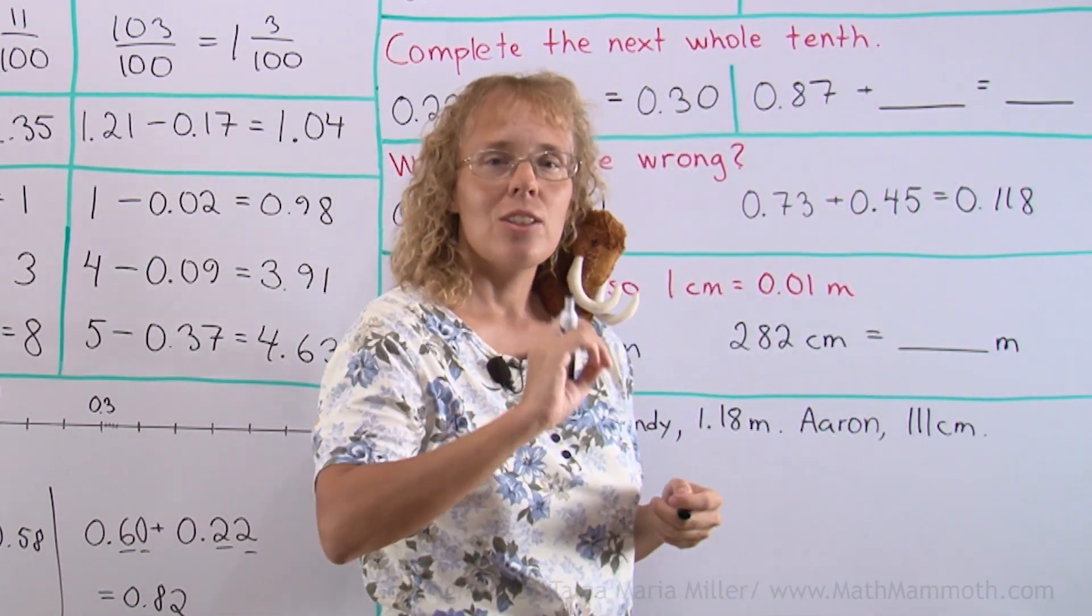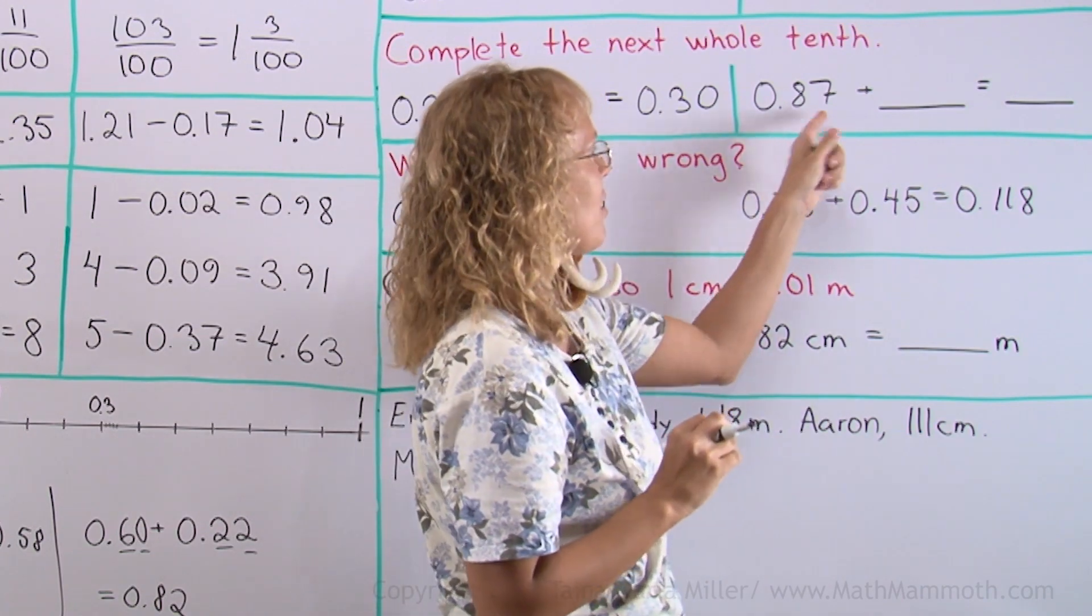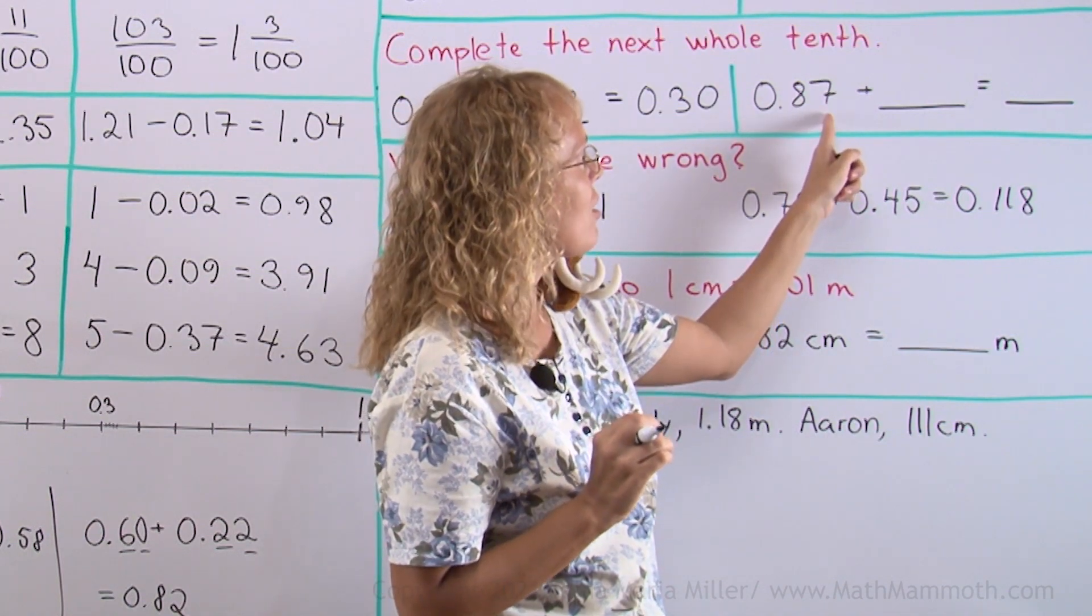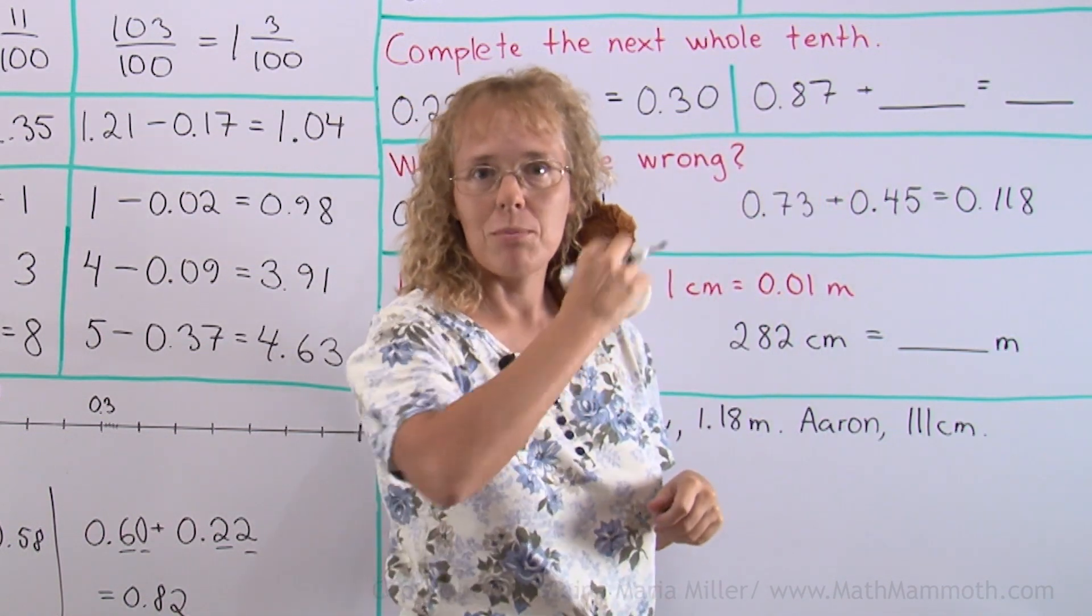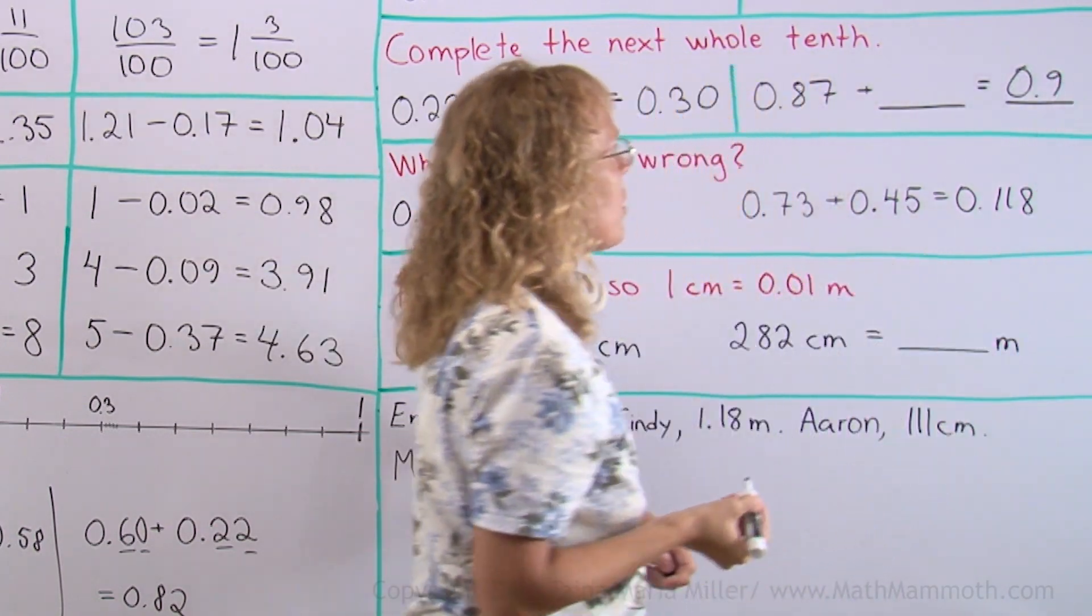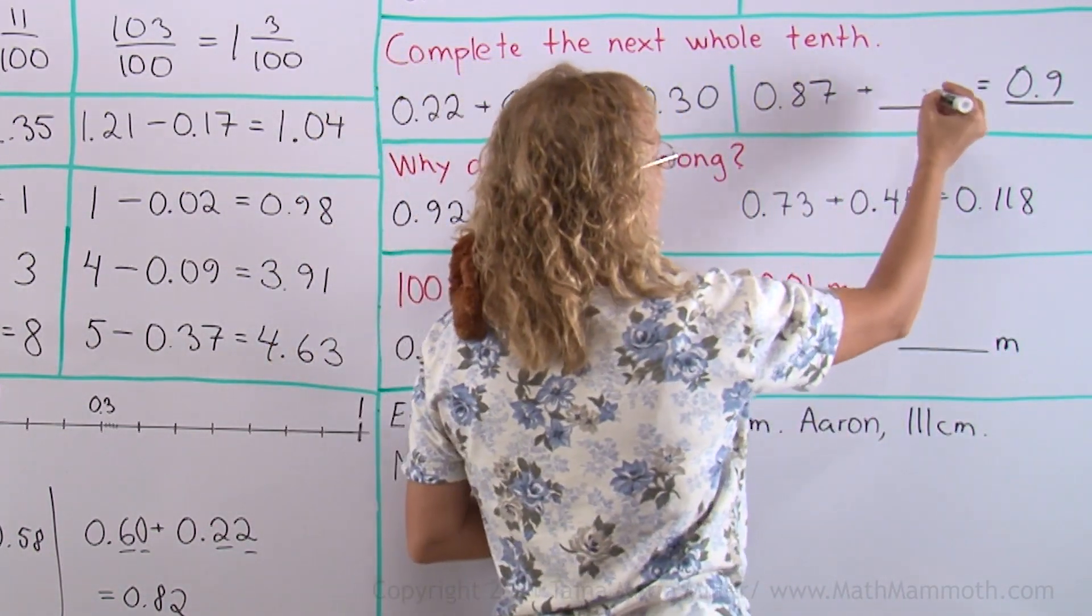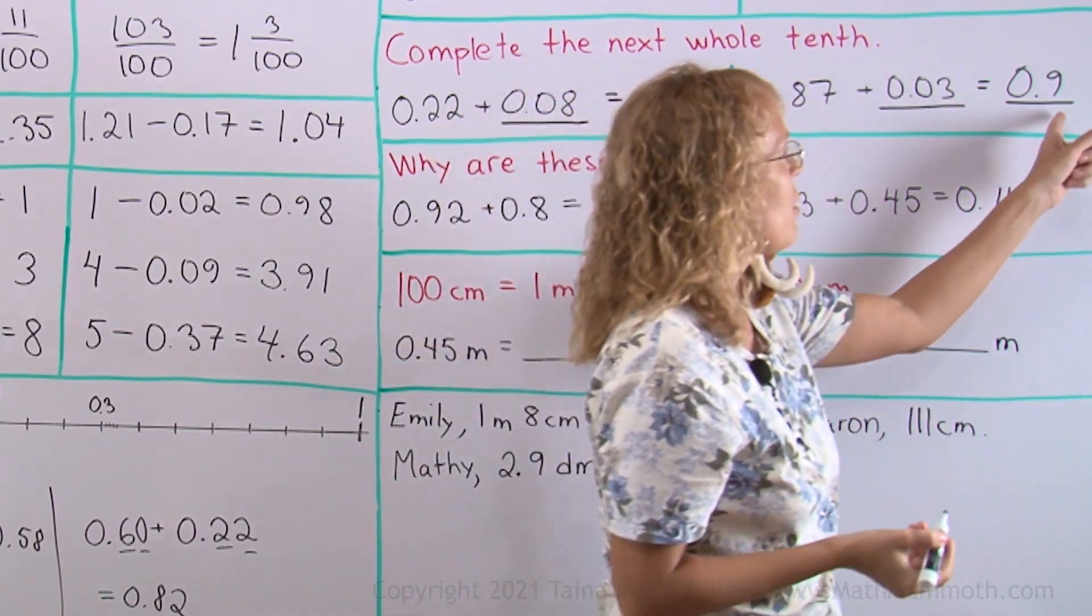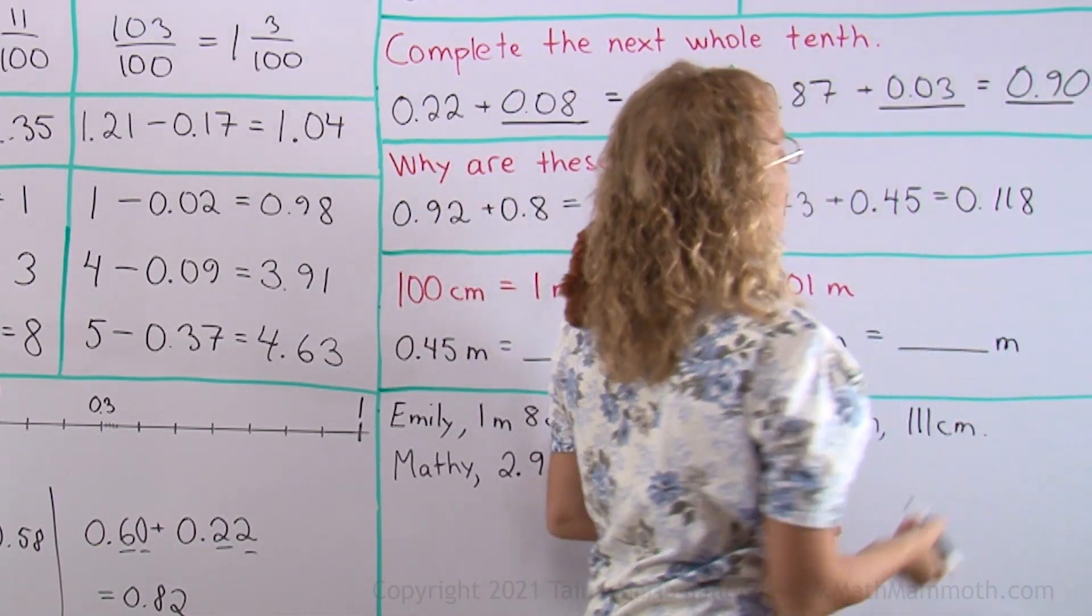What will be the next whole tenth after 87 hundredths? This is also 8 tenths and 7 hundredths, so after 8 tenths comes 9 tenths. So 9 tenths goes here. And we need to add 3 hundredths to it, because remember, this you can write as 90 hundredths, if it helps you.